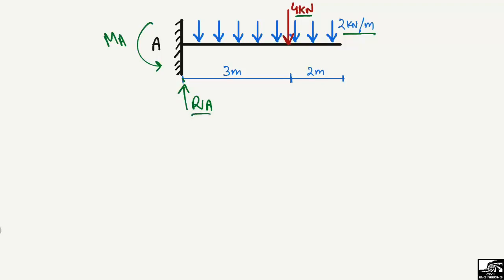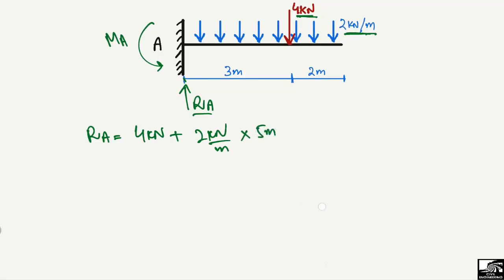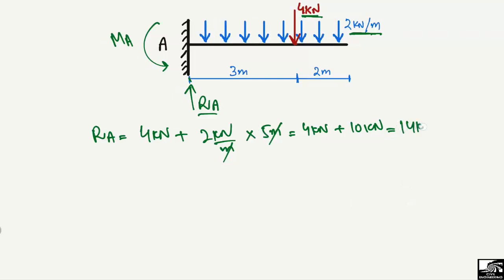Starting with the support reaction, RA equals the total load acting on the beam since it is the only support reaction. The total load is the concentrated load of four kilonewton plus the distributed load of two kilonewton per meter distributed over five meters, giving two times five equals ten kilonewton. So RA equals four plus ten equals fourteen kilonewton.